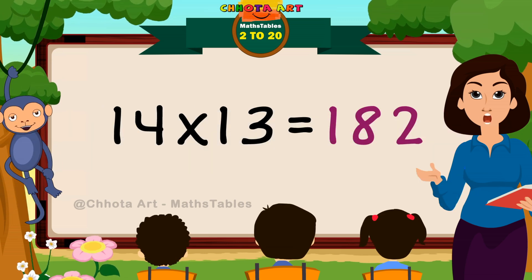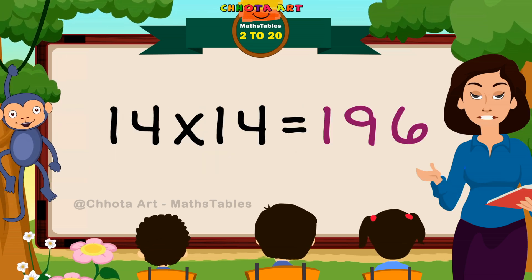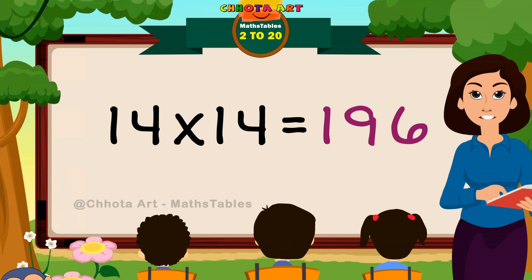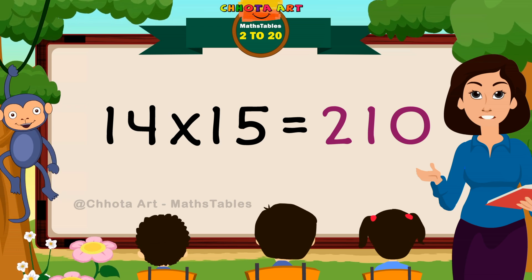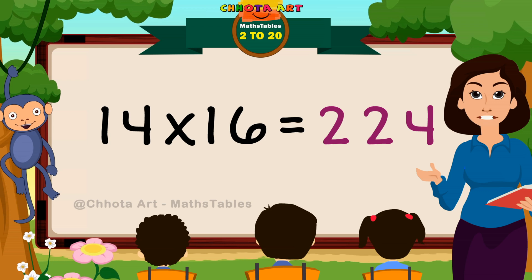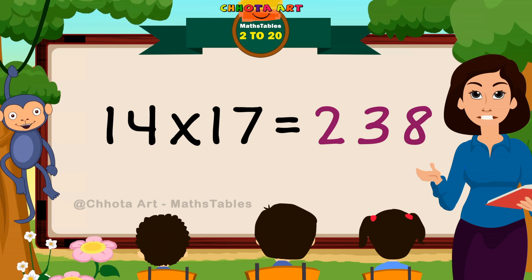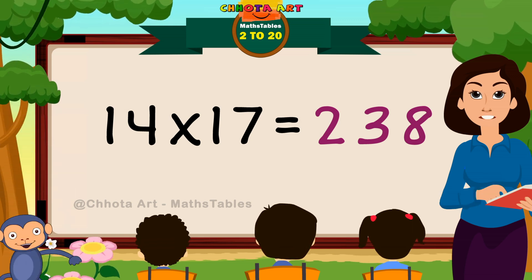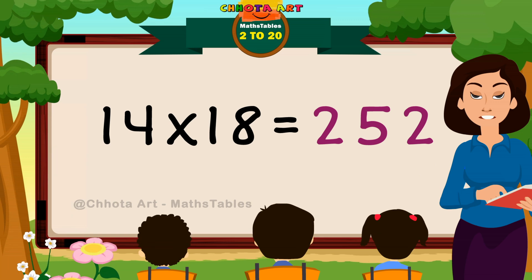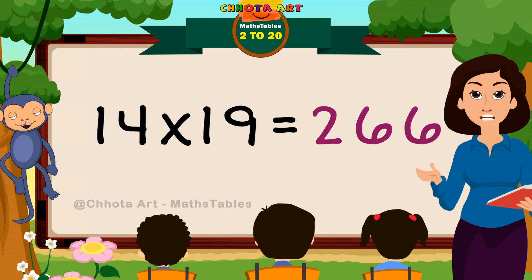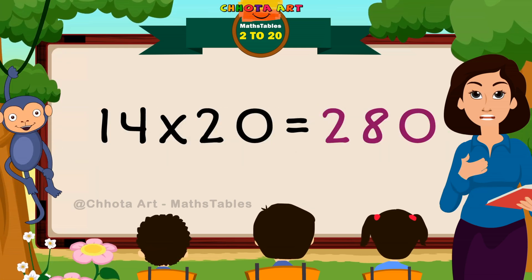14 twelves are 168. 14 thirteens are 182. 14 fourteens are 196. 14 fifteens are 210. 14 sixteens are 224. 14 seventeens are 238. 14 eighteens are 252. 14 nineteens are 266. 14 twenties are 280.